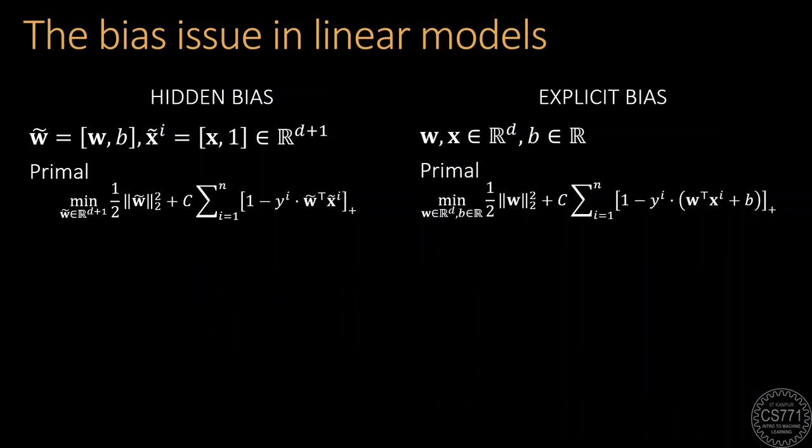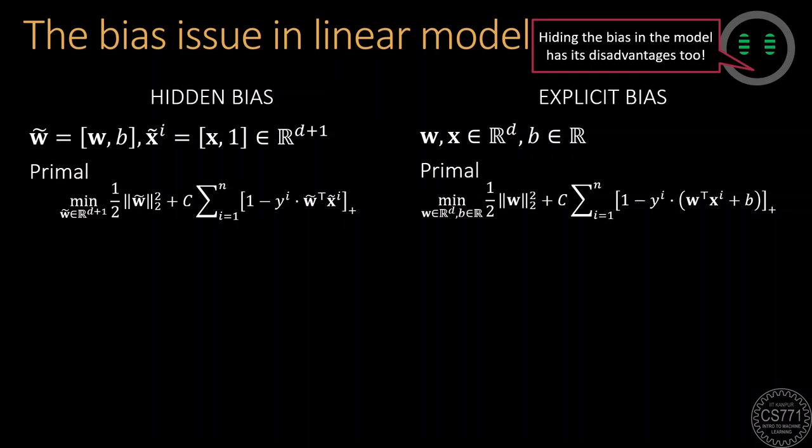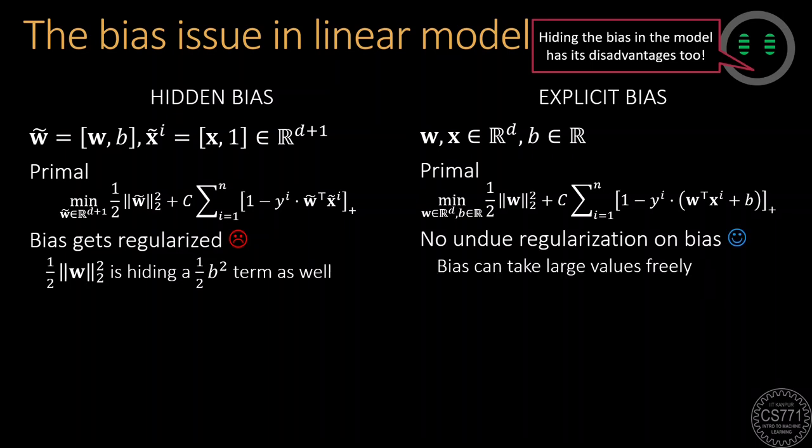However, the hidden bias formulation has its disadvantages too. Since b is a part of the model vector now, the objective function is hiding a half b-squared term as well. This term discourages b from taking a large magnitude value.